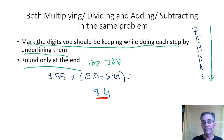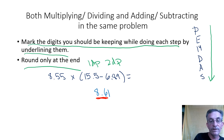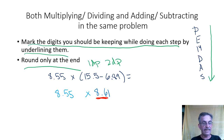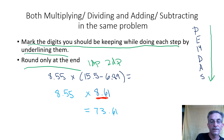Now, in the next step, we're going to use the entire number the calculator gave me — 8.61 — not just 8.6. We're supposed to multiply, right? We haven't multiplied by 8.55 yet. So I would get out my calculator and type in 8.55 times the entire number from the first step, 8.61. When you do that, your calculator is going to say 73.6155.